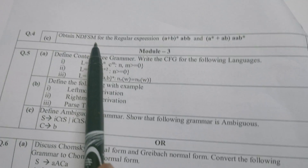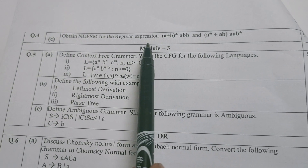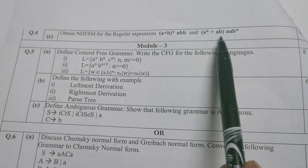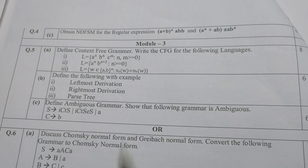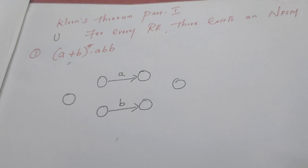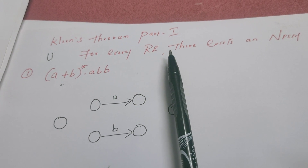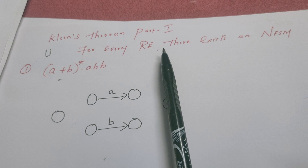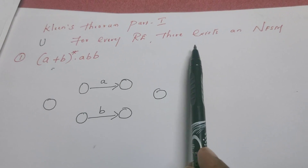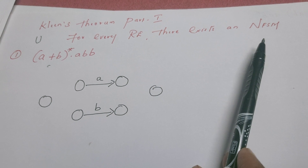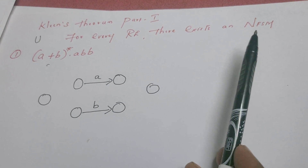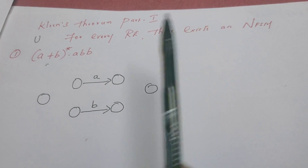Obtain a non-deterministic finite state machine for the regular expression (a+b)* abb and a* + ab·aab*. This is Kleene's theorem part 1. The statement of the theorem is: for every regular expression, there is an equivalent non-deterministic finite state machine.